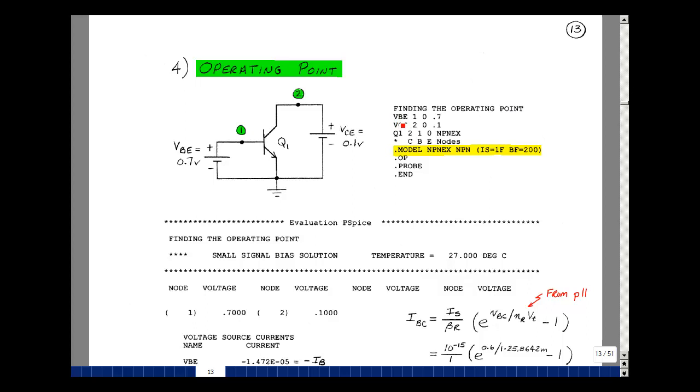There's a voltage source, I'll call it BE, between nodes 1 and 0, which is plus and minus, with a value of 0.7. A voltage source between the collector and the emitter, I'll call VCE, with a value of 0.1 from node 2 to node 0, plus node 1 minus node 2.